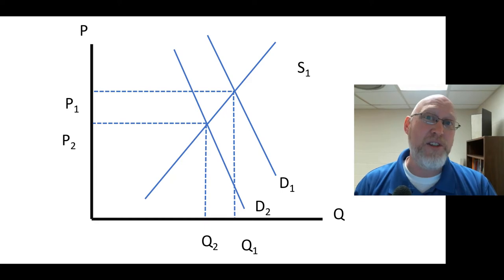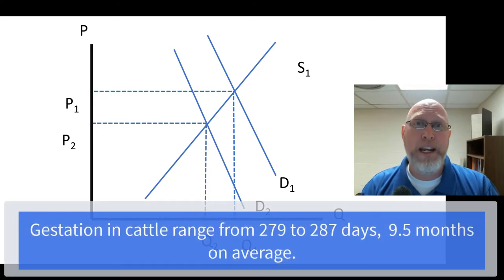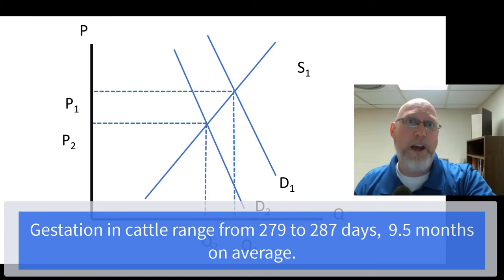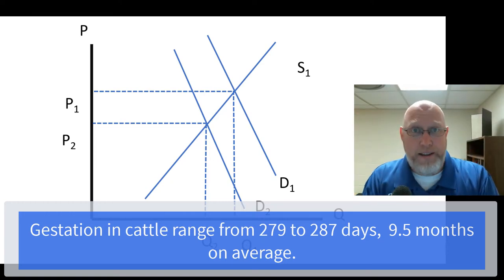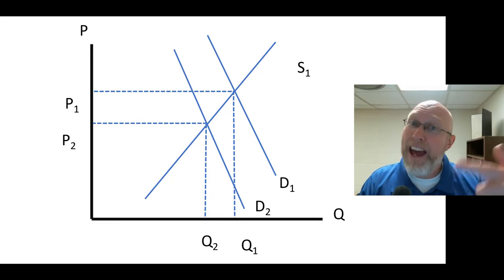Livestock production is the exact same way. Correct me if I'm wrong, but I think it takes nine months for a cow to gestate, to get from conception to birth. That's a time lag, and that calf is not ready to sell, that's not marketable when it hits the ground. It needs to grow a little bit and that takes time as well.